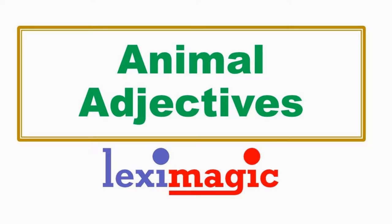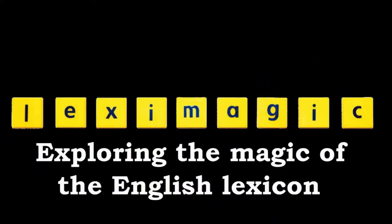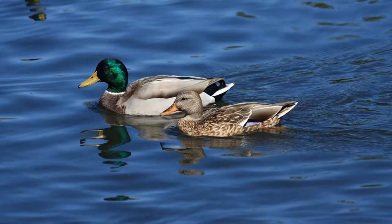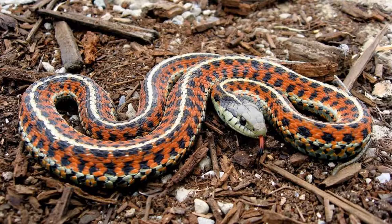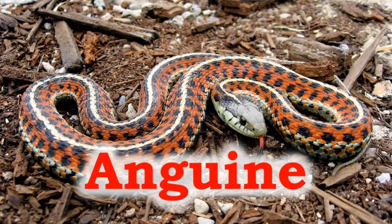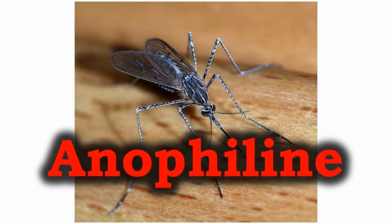In this unit, we will look at some of the animal adjectives which are used in relation to certain animals or groups of animals or categories of animals. Anatine refers to swans, ducks and geese. Anguine refers to snakes. Anopheline refers to a type of mosquito that transmits malaria.